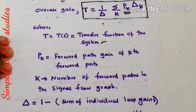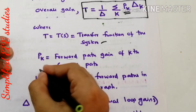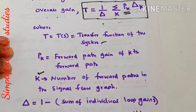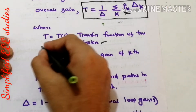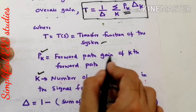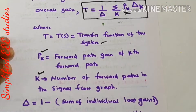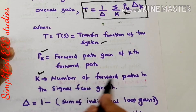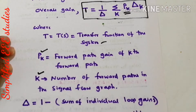You should have a good observation. From the given signal flow graph you need to determine how many forward paths there are, then based on each forward path you have to calculate the forward path gain. So pk is the forward path gain of the kth forward path, and k is the number of forward paths in the given signal flow graph.